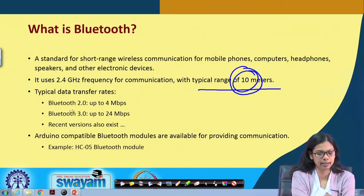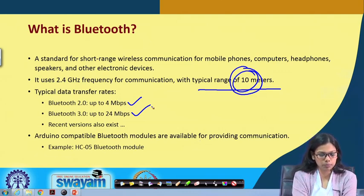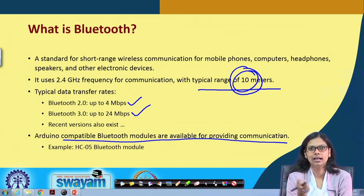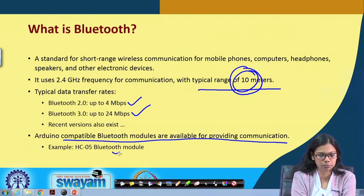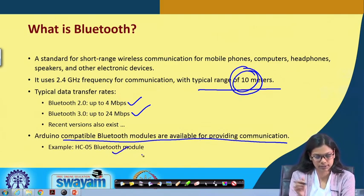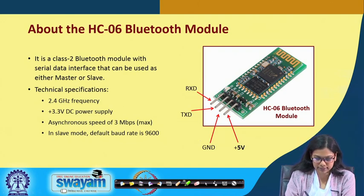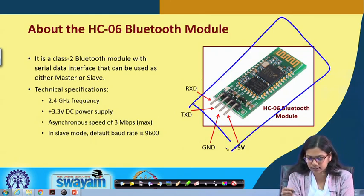The typical data transfer rates are: for Bluetooth 2.0, up to 4 Mbps, and for Bluetooth 3.0, it is 24 Mbps. There are some more recent versions as well. Arduino-compatible and STM-compatible Bluetooth modules also exist — you must connect them correctly and use the correct commands. You need to set certain baud rates accordingly. Examples include the HC-05 and HC-06 Bluetooth modules.